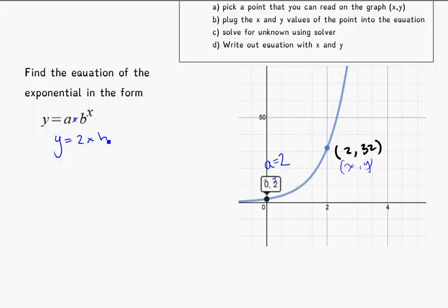So let's start with what I know. y equals 2 times something I don't know to the power of x. I'm going to use the point (2, 32). So x, y: y becomes 32 equals 2 times b to the power of 2. Put it into solver and see what you get.